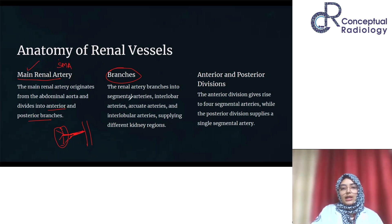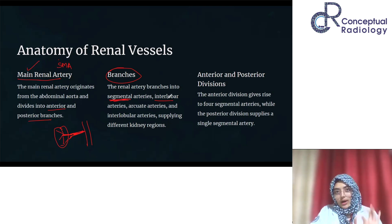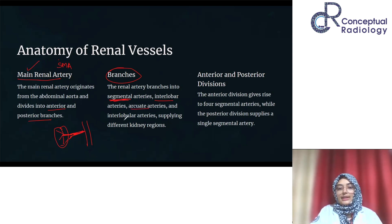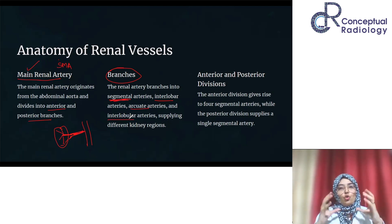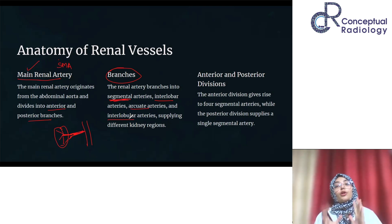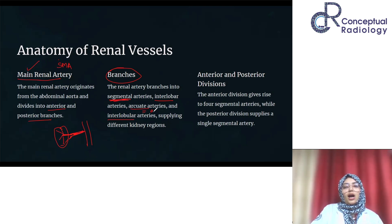Now let's look at the branches. The renal artery branches into segmental arteries, then interlobar arteries, then arcuate arteries, and finally interlobular arteries - save the complex word for last. After interlobular comes the afferent arteriole. Arcuate means forming an arc - it forms an arc around the medullary pyramid, hugging it in an arc shape. Interlobular arteries are very fine small branches coming from the arcuates, and you do not need to blame yourself if you cannot see them on a lower resolution machine.